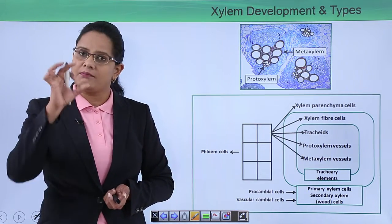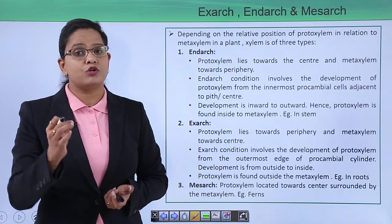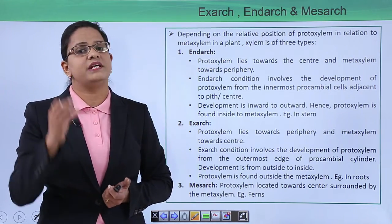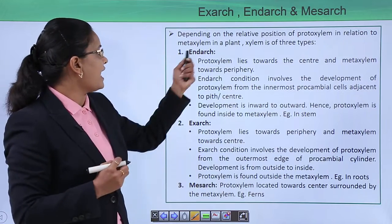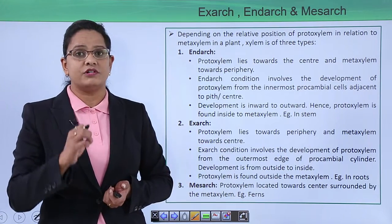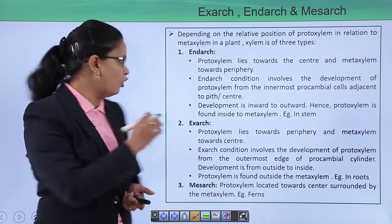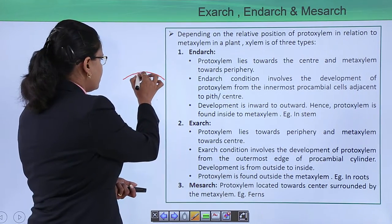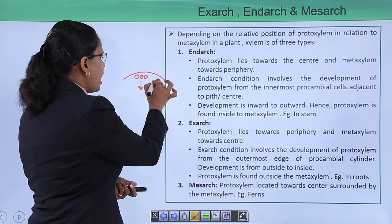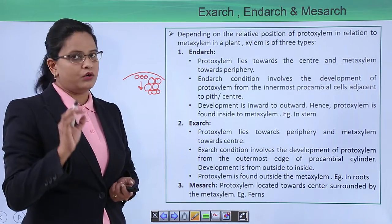Based on the relative position of proto xylem and meta xylem, xylem is divided into different categories: endarch, exarch, and mesarch conditions. In the endarch condition, the proto xylem lies towards the center. If this is the cambium, the proto xylem is pushed towards the inside, and the meta xylem is towards the outside, so growth is from inside to outside.